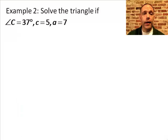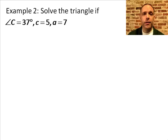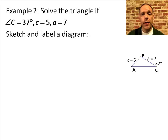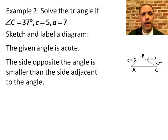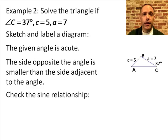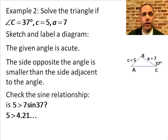For example 2, angle C is 37 degrees, side c is 5, side a is 7. Pause the video and see what you can do working this one on your own. If you get stuck, play the video just long enough to get unstuck, and if you solve it all on your own, play the rest of the video just to make sure you got the answers right. First thing: sketch and label a diagram. Notice that the given angle is acute, and the side opposite that angle is smaller than the side adjacent to that angle. Checking that sine relationship, the side opposite the angle is bigger than the adjacent side times sine of the angle, so there are two triangles.